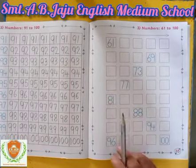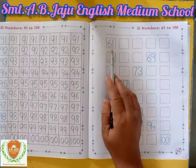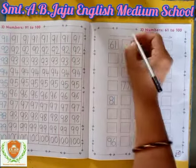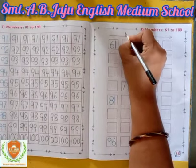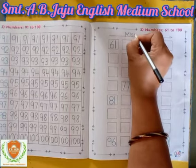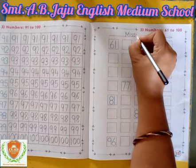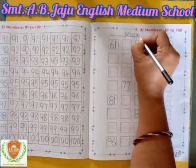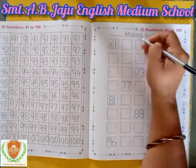These are missing numbers from 61 to 100. You have to write down the missing numbers. Write down on the top: 'Missing' — M capital, I small, S double S small, I small, N small, G small. Then write down 'Numbers' — N U M B E R S. Missing Numbers.